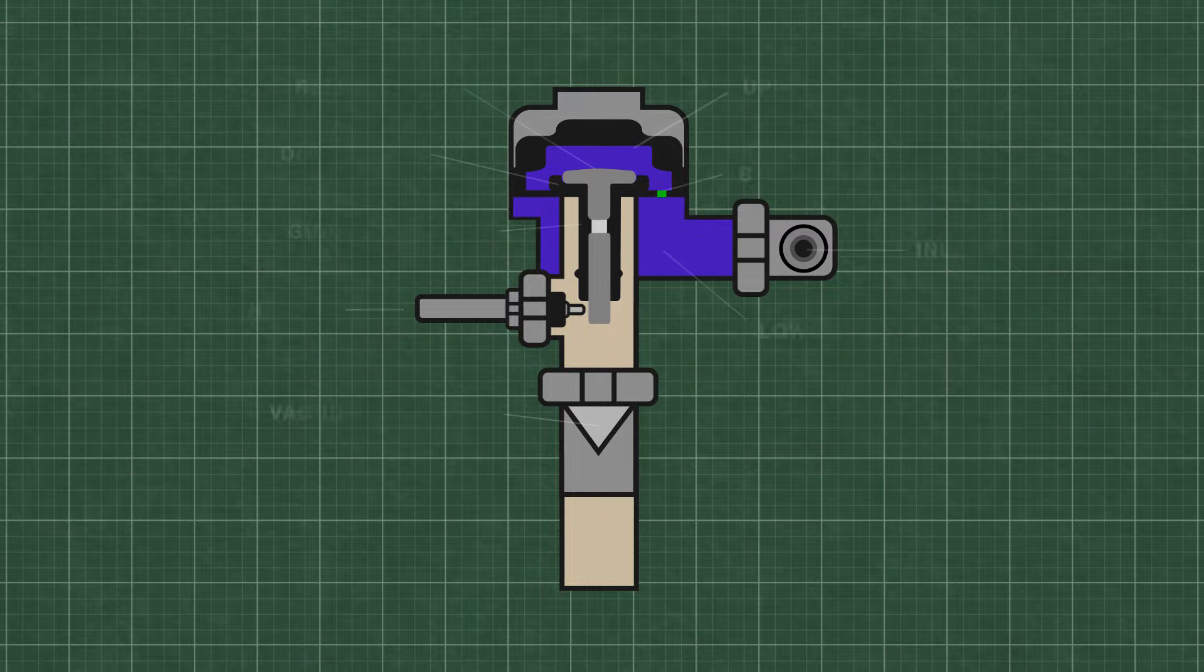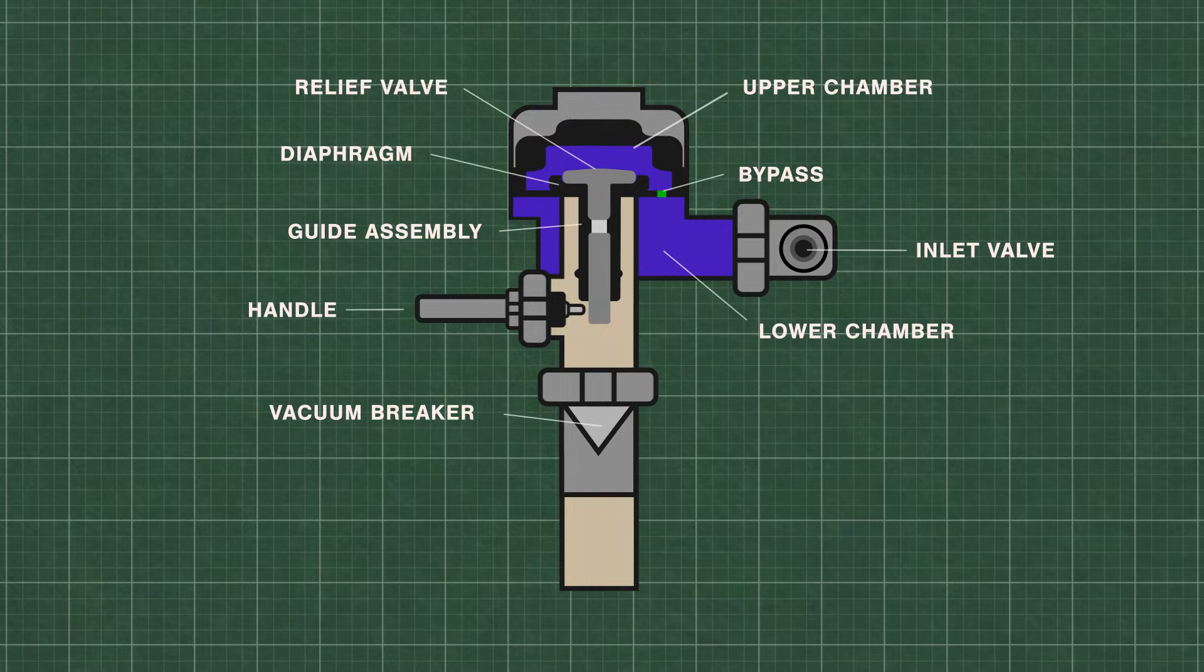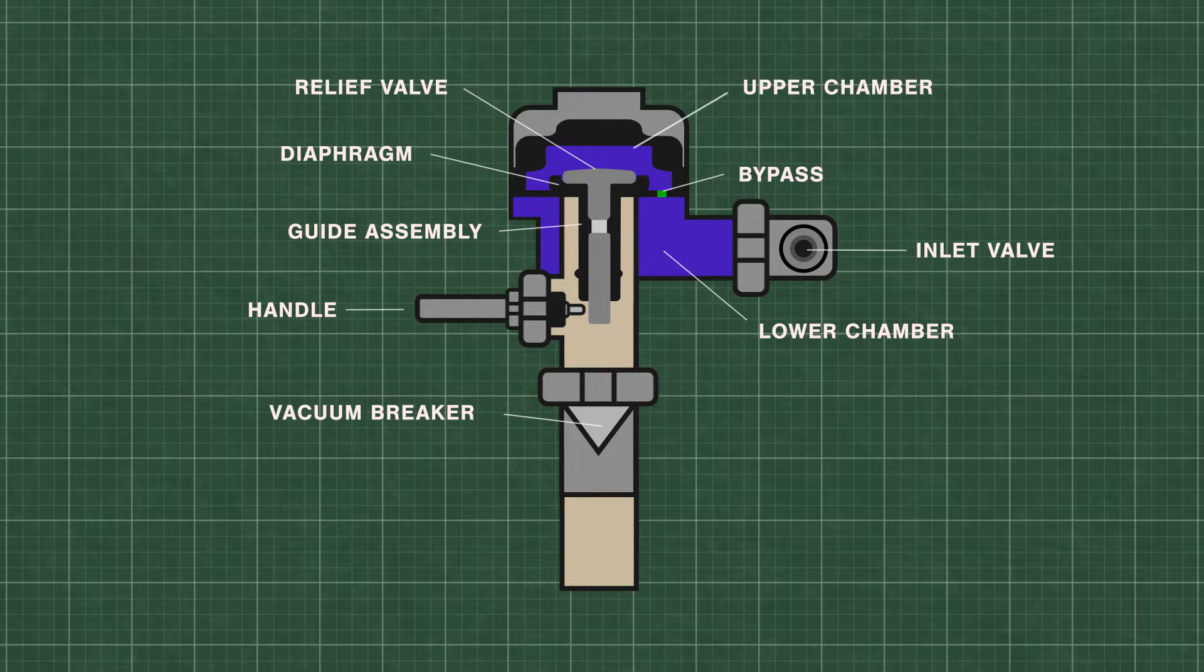Flushometers or flush valves are just automatically timed self-closing valves. At rest, water is at equal pressure in the upper and lower chambers. This keeps the flexible rubber diaphragm closed tightly on the valve seat.